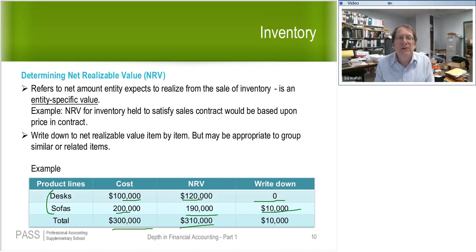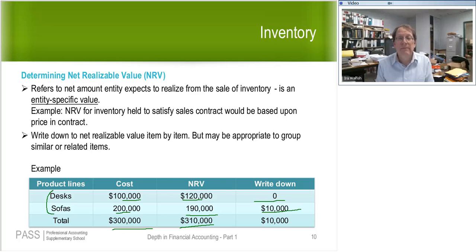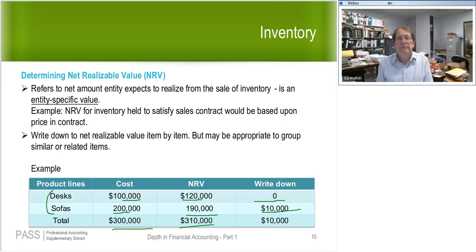This identical issue comes up in revenue recognition where you have multiple contracts — do you apply the same revenue recognition policy and combine all construction contracts, or not? Same issue. It matters because you can bury a loss when you combine things.